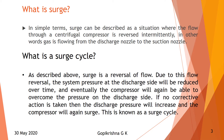Due to this flow reversal, the system pressure at the discharge will be reduced over time. Eventually the compressor will again be able to overcome the pressure at the discharge side. If no corrective action is taken, the discharge pressure will increase and the compressor will again surge. This repeating cycle is called a surge.